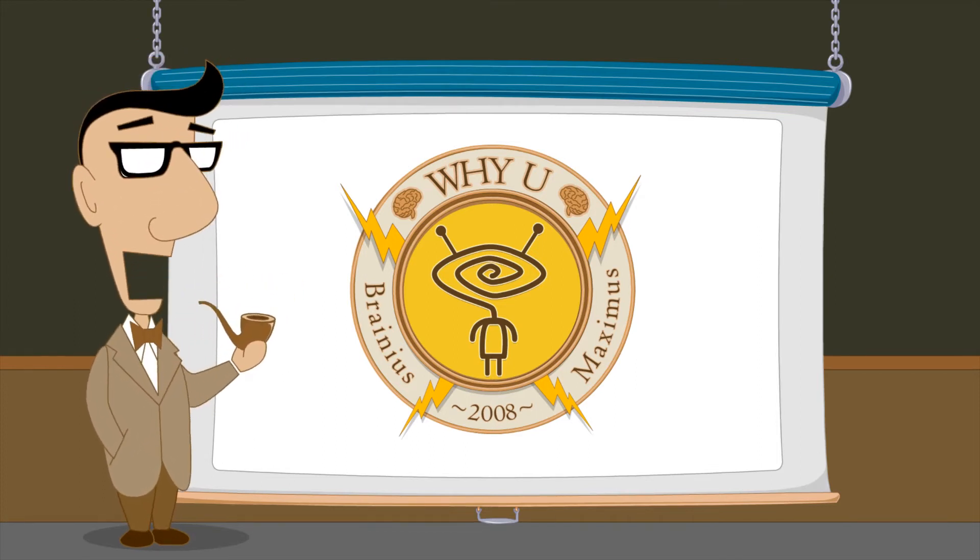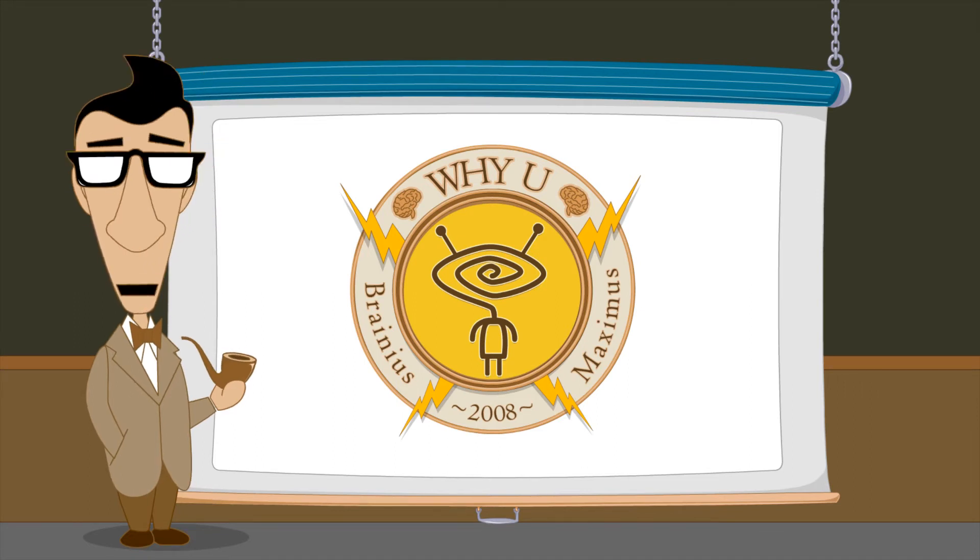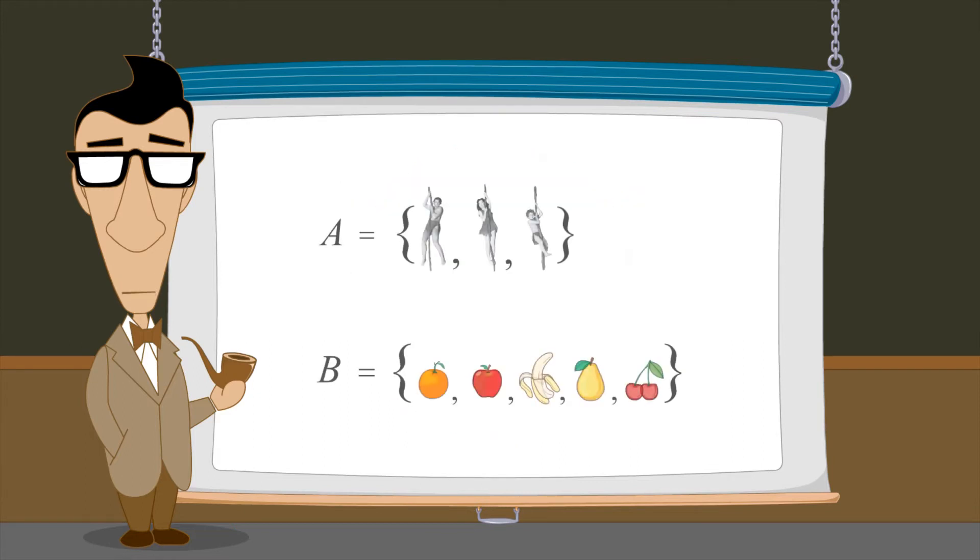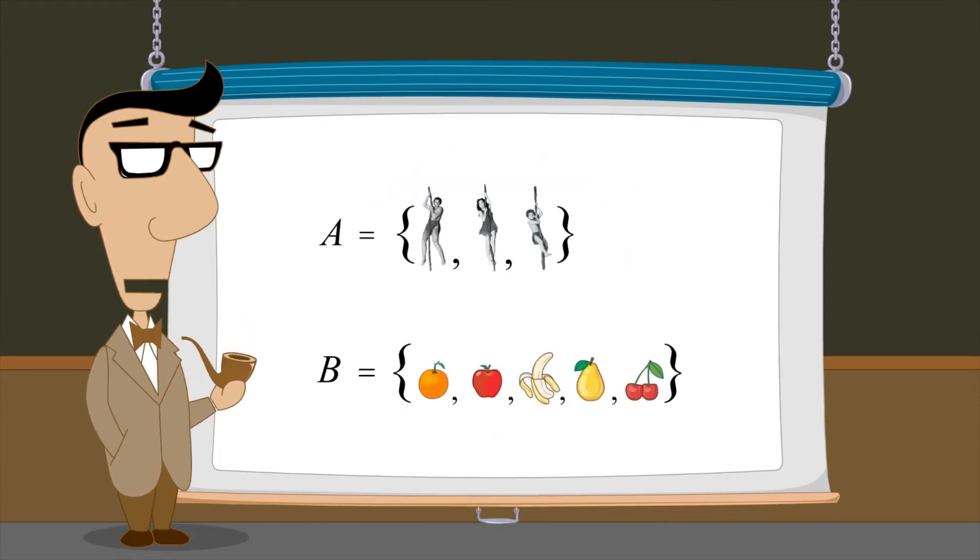In the previous lecture, we saw how to create a binary relation between two sets. These sets can contain any type of elements. We showed that a binary relation is a way of associating or relating elements of one set to elements of the other set.